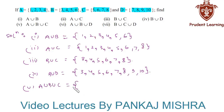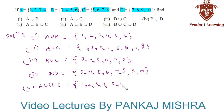Next we need to find A union B union C, that is a set that contains all the elements that are present either in A or in B or in C. So this is equal to {1, 2, 3, 4, 5, 6, 7, 8}.